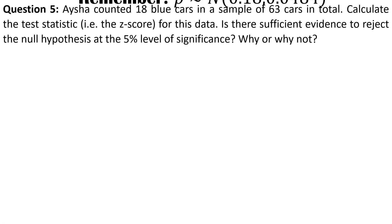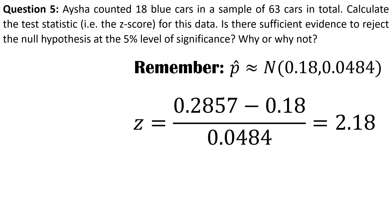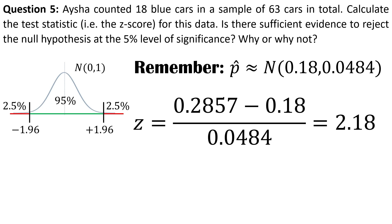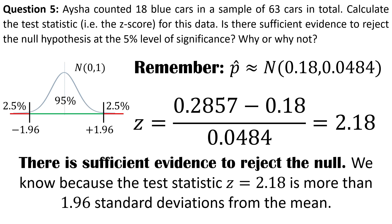Turning to the data: keeping in mind the distribution of P-hat under the null, we standardize 18 cars out of 63. So 18 divided by 63 is 0.2857. Standardizing that value, we get a test statistic of 2.18. In other words, our P-hat is 2.18 standard deviations above the mean value of 0.18. Remembering our decision rule, we're going to reject the null hypothesis because our test statistic is in the rejection region — specifically to the right of 1.96. So there is sufficient evidence to reject the null.